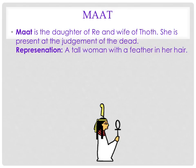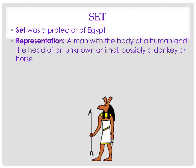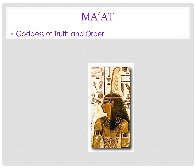Maat is both a concept and a goddess — she is represented as a woman with a feather in her hair. When you die, you are taken up to the afterlife and your heart is weighed against her feather. Maat is the goddess of truth and order. Sobek has the head of a crocodile and is the god of water. Set is another deity, though his animal form is uncertain.